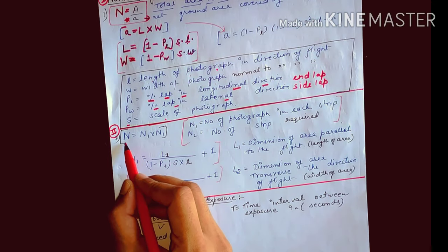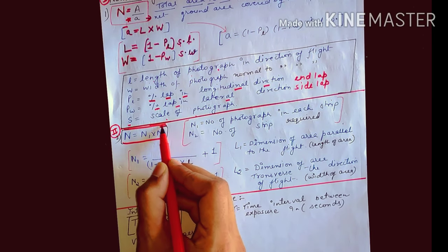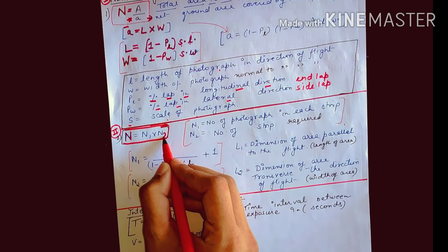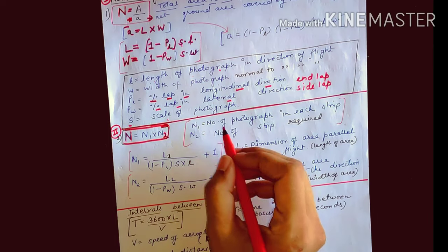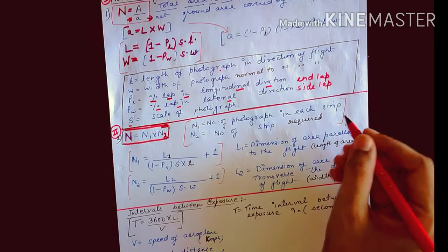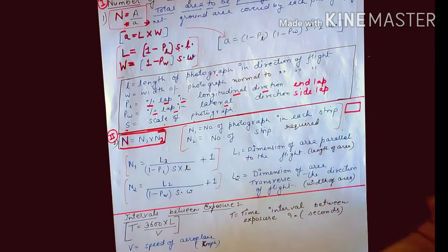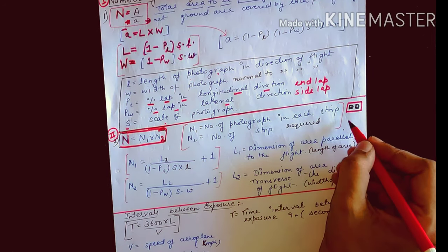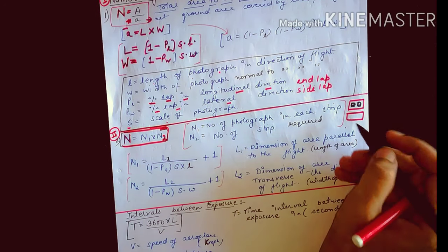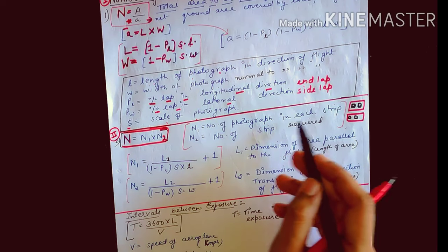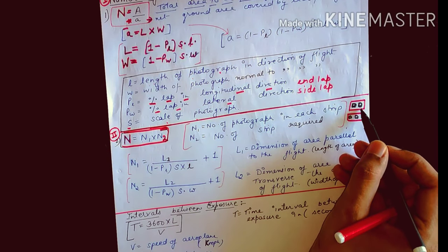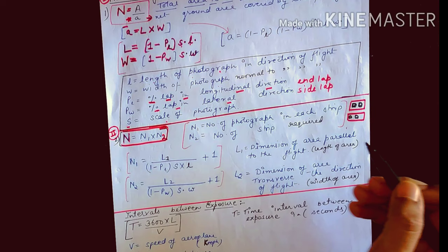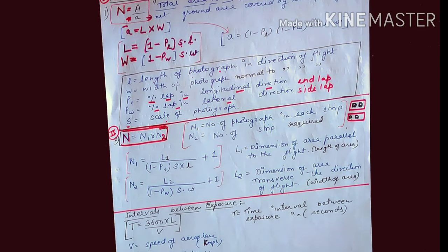The second method uses strips. The number of photographs equals N1 × N2, where N1 is the number of photographs in each strip and N2 is the number of strips required. For example, if each strip has 2 photographs and there are 2 strips, then N1 × N2 = 2 × 2 = 4 photographs total in the area.